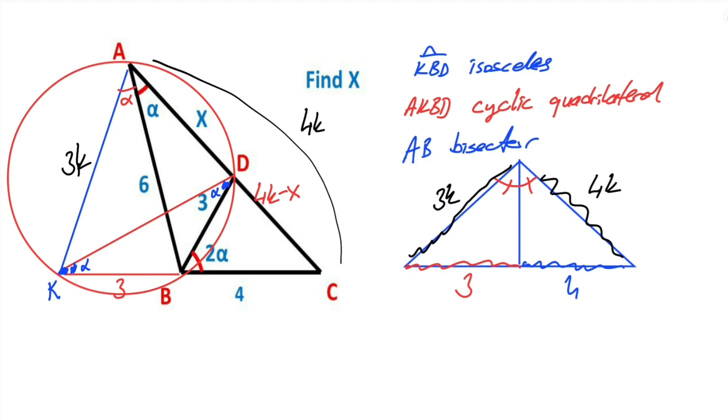Next step, we know that the square of bisector length, let's call here m, m squared must equal 3k times 4k minus 3 times 4. So m squared equals 12k squared minus 12.